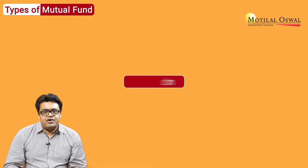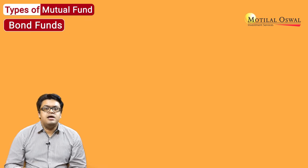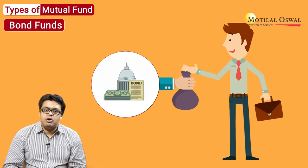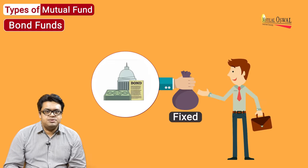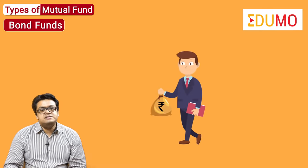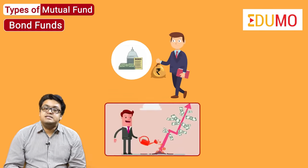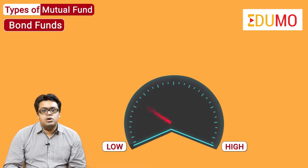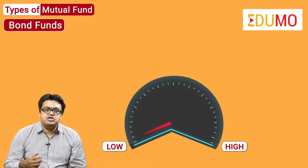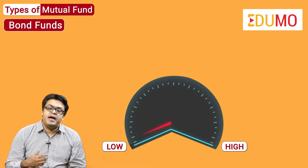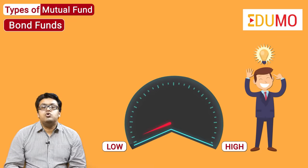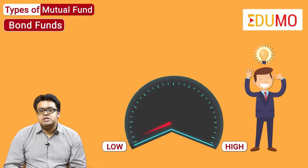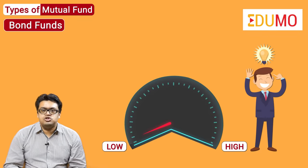Next we move on to Bond Funds. Here the investors are paid a fixed amount back on their initial investment. They invest in government and corporate debt. Since their risk is lower, their potential is lesser than equity funds. This is ideal for investors who are risk averse or who are looking to cushion their exposure to equity.